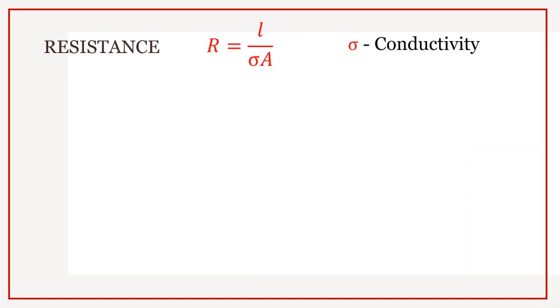As we know, resistance R equals L by sigma A, where sigma is conductivity. Rho could be written as 1 by sigma, where rho is resistivity.